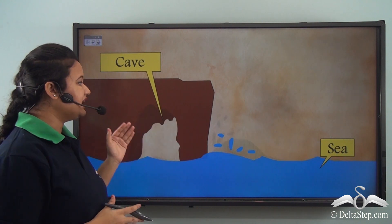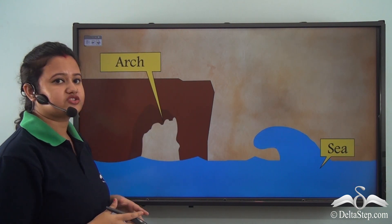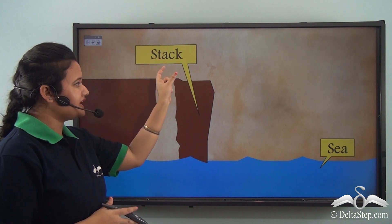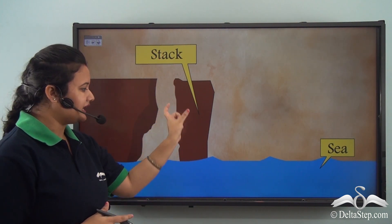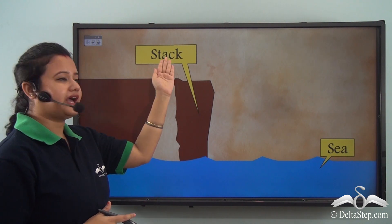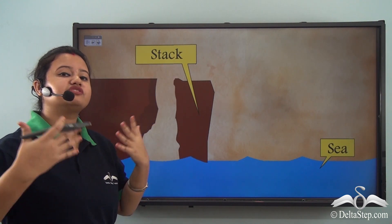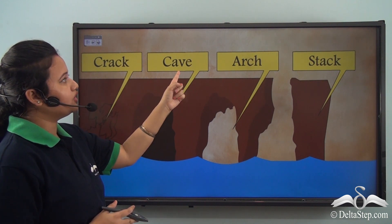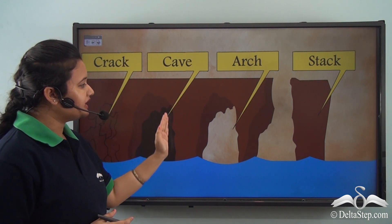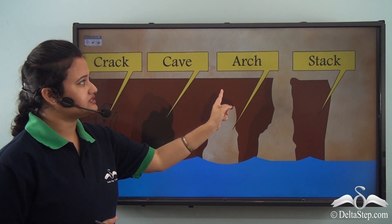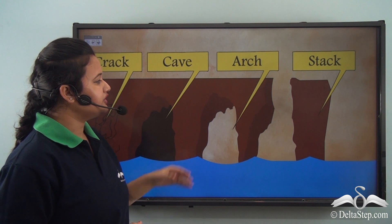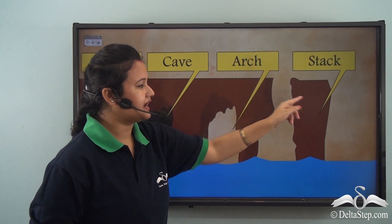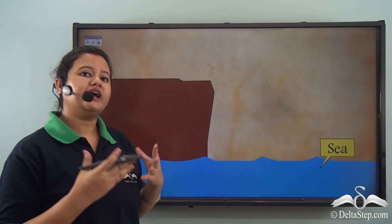Due to further erosion, the cave transforms into a hollow structure which is known as an arch. Due to further erosion still, the roof of the arch falls off and a vertical structure is formed in the middle of the ocean, which is known as a stack. So we learned how different landforms are formed by sea waves: first a crack develops, these cracks become large enough to form a cave, eventually the cave transforms into a hollow structure with a roof called an arch, and then due to the attack of sea waves, the roof of the arch falls off and it forms a stack.